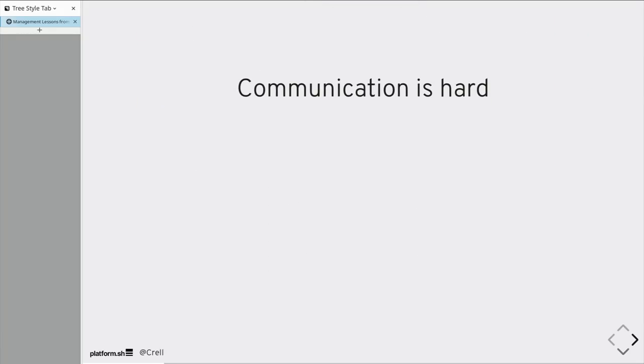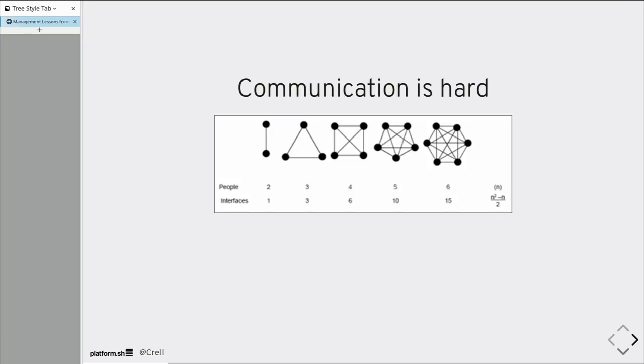Because communication is hard. This should sound familiar from the keynote this morning. Why is communication hard? Because the number of communication channels goes up faster than the number of communication nodes. The more people you add to a project, the more conversation lines there are. When you have two people on a team, there's one line of communication. Three people, there's three lines. Four people, there's six lines. Five people, there's ten lines of communication.